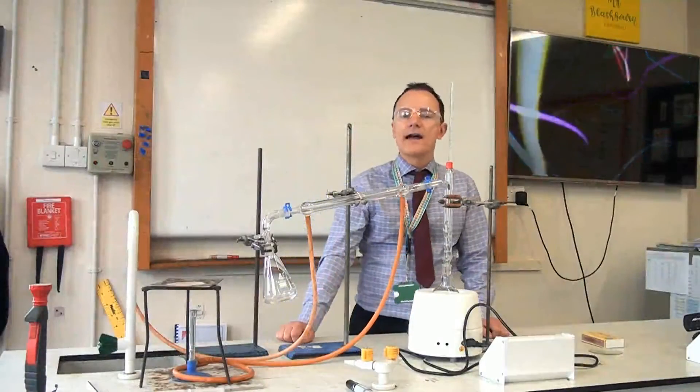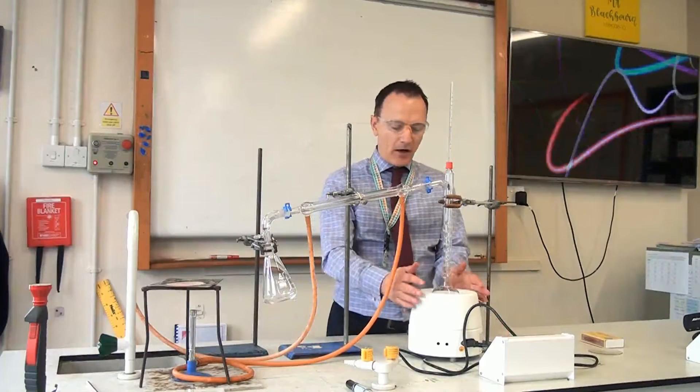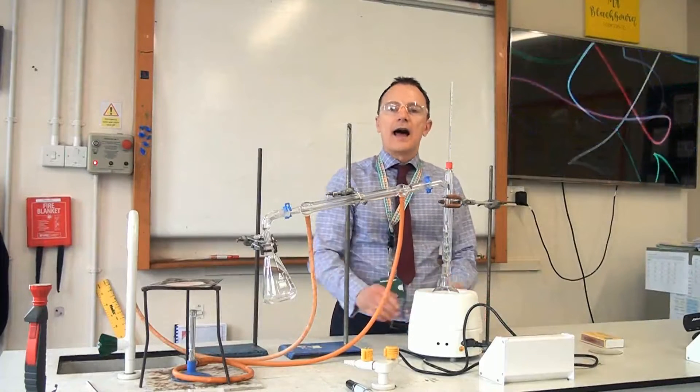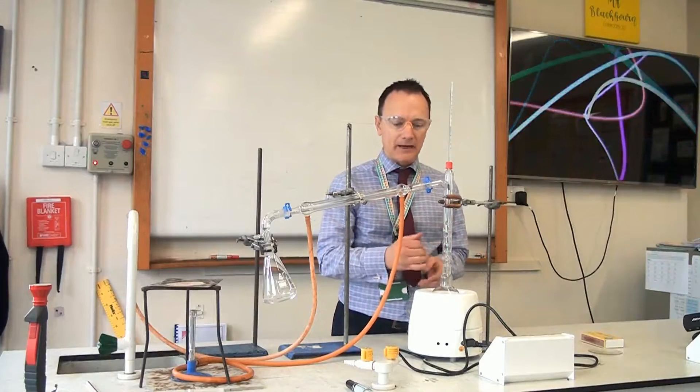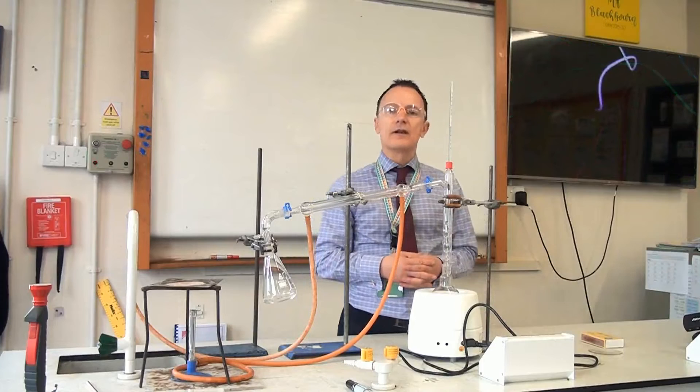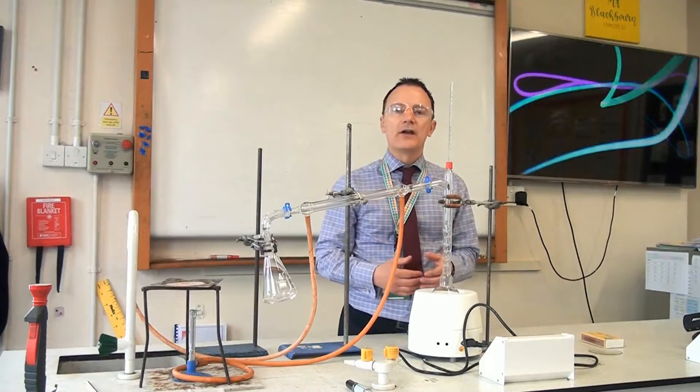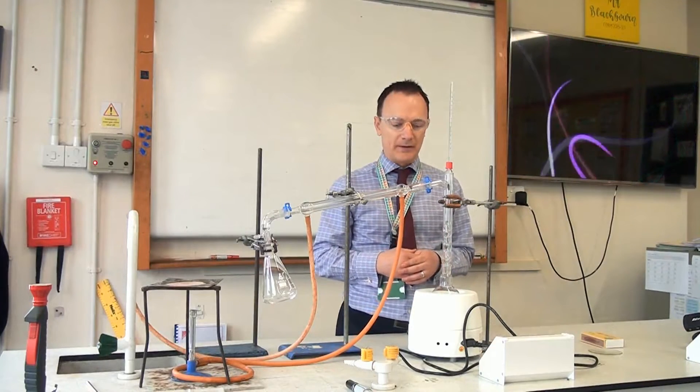This is how we carry out fractional distillation of crude oil in the lab. So we've got a flask here with crude oil in, and it's been heated by this electric heater. And some of those hydrocarbon molecules are going to start to evaporate and pass up the fractionating column. The first hydrocarbon molecules to evaporate will be the smallest chain molecules because they've got the lowest boiling points as they've got less intermolecular forces between them.